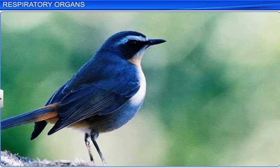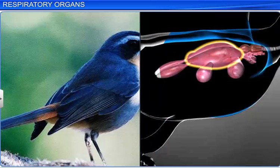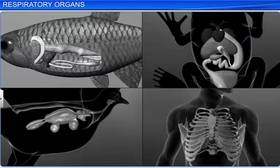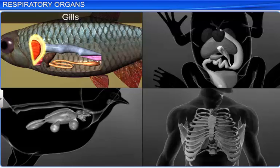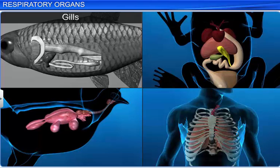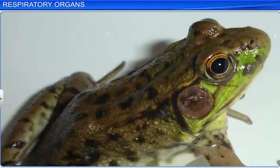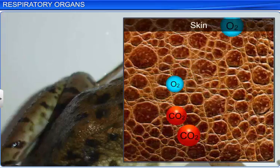Terrestrial forms of vertebrates use vascularized bags called lungs. Among vertebrates, fishes respire through gills, whereas amphibians, reptiles, birds, and mammals respire through lungs. Apart from lungs, frogs can also respire through their skin.